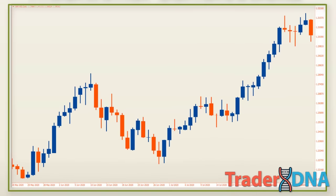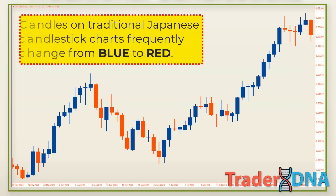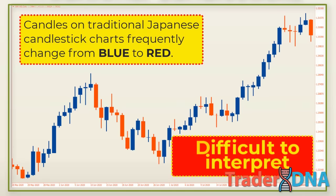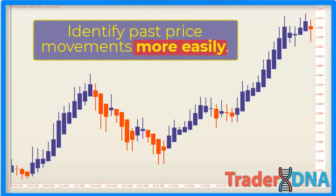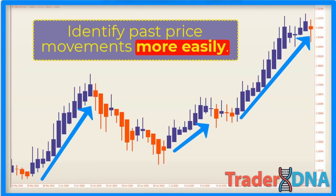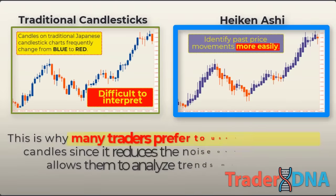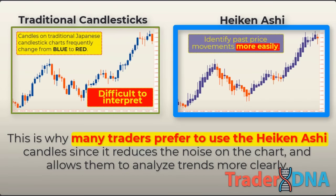Candles on traditional Japanese candlestick charts frequently change from blue to red, which can make them difficult to interpret. On the other hand, candles on the Heiken Ashi chart display more consecutive colored candles, helping traders identify past price movements more easily. Heiken Ashi charts tend for their candles to stay blue during an uptrend and stay red during a downtrend, in contrast to traditional Japanese candlesticks that alternate color even if the price is moving strongly in one direction. The Heiken Ashi chart is much smoother looking, which reduces noise and allows traders to analyze trends more clearly.